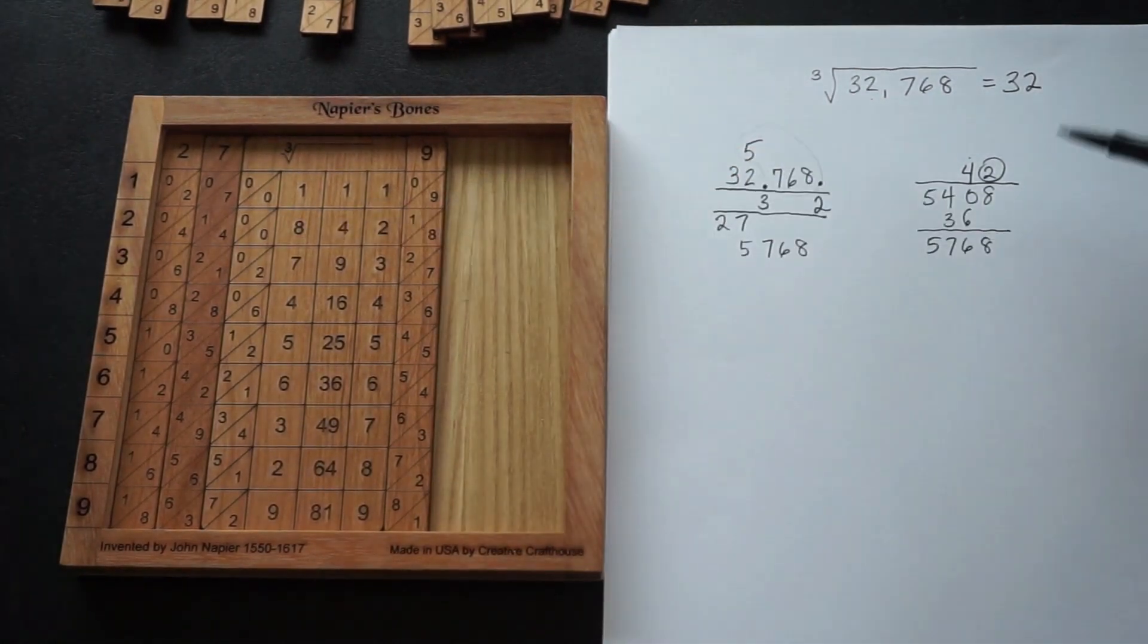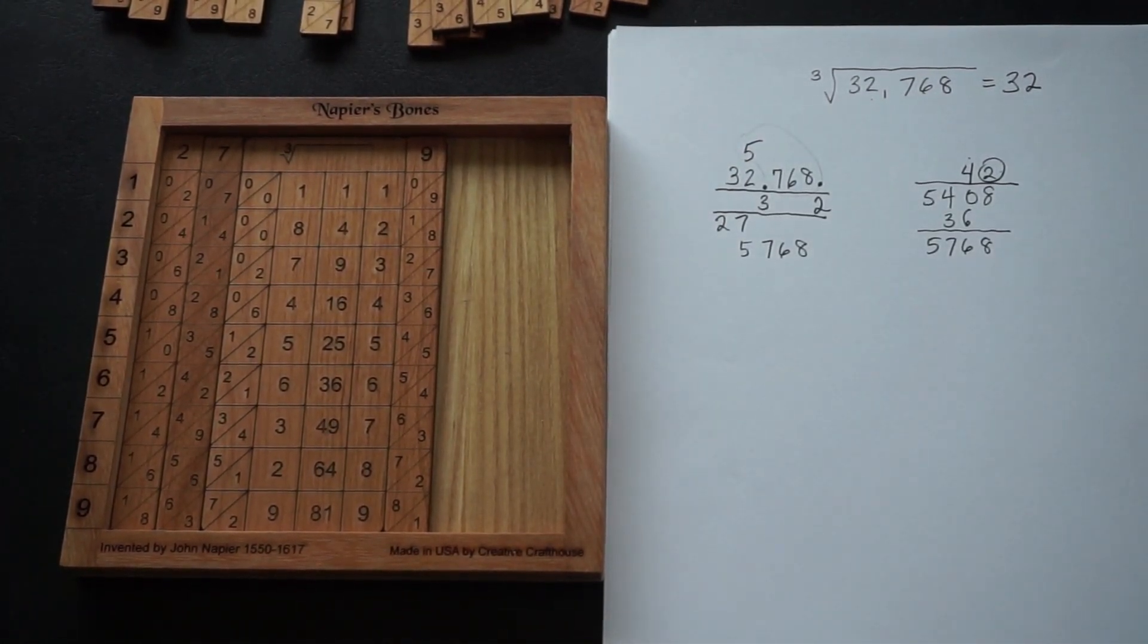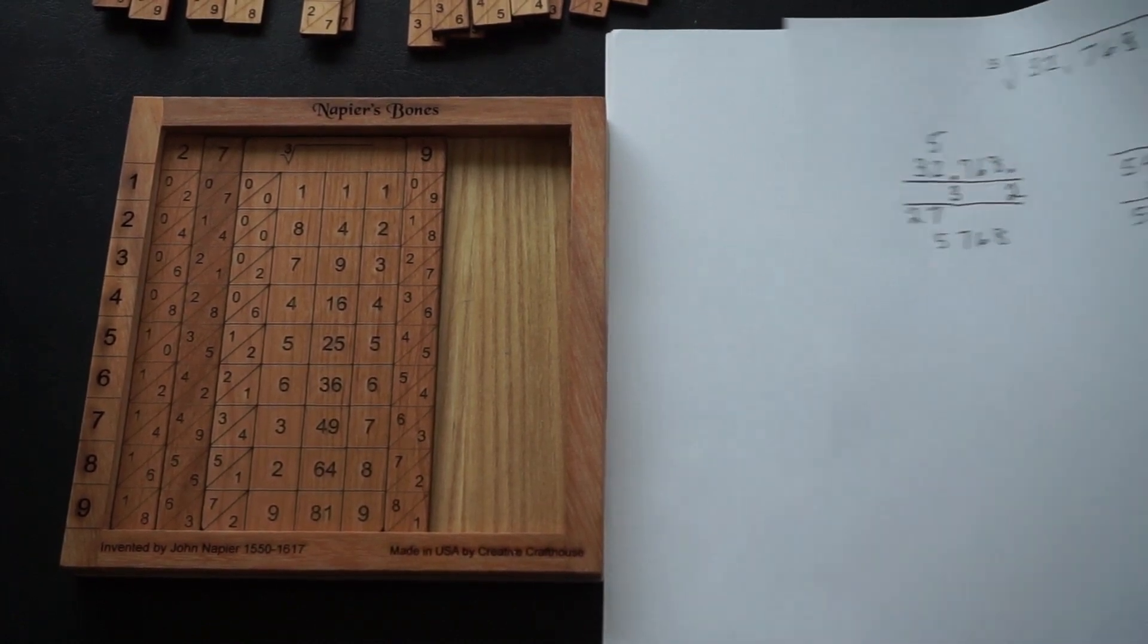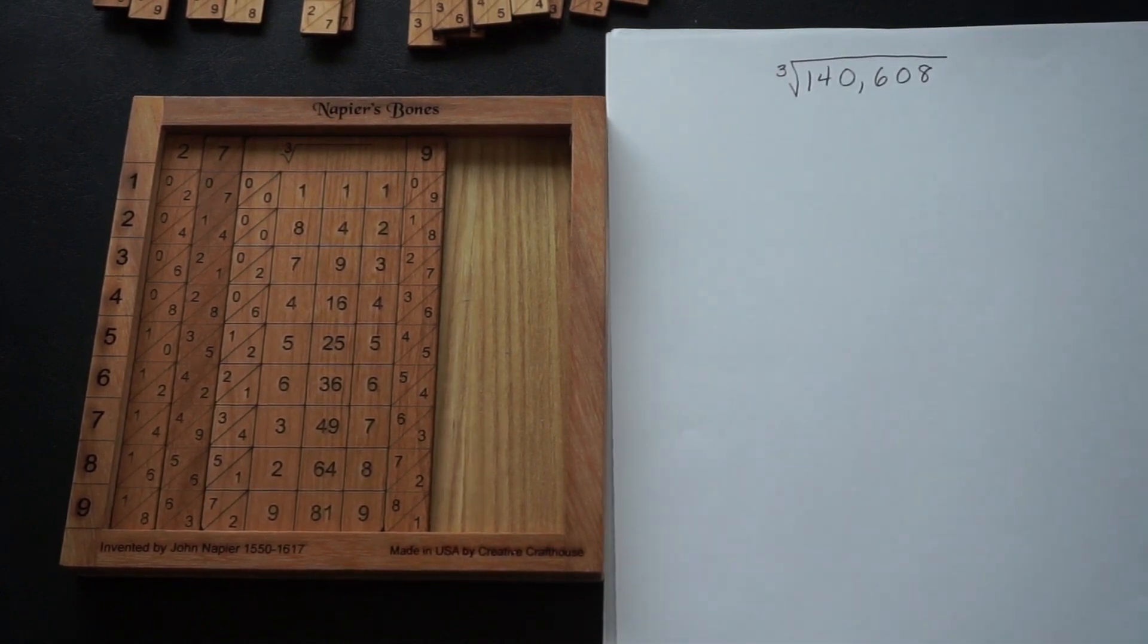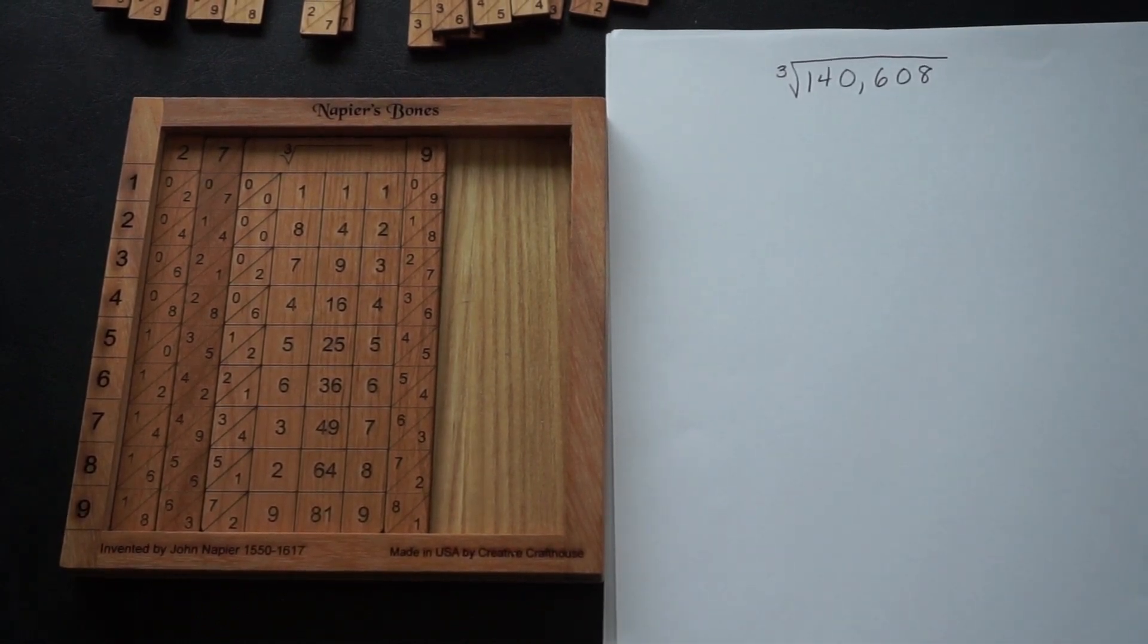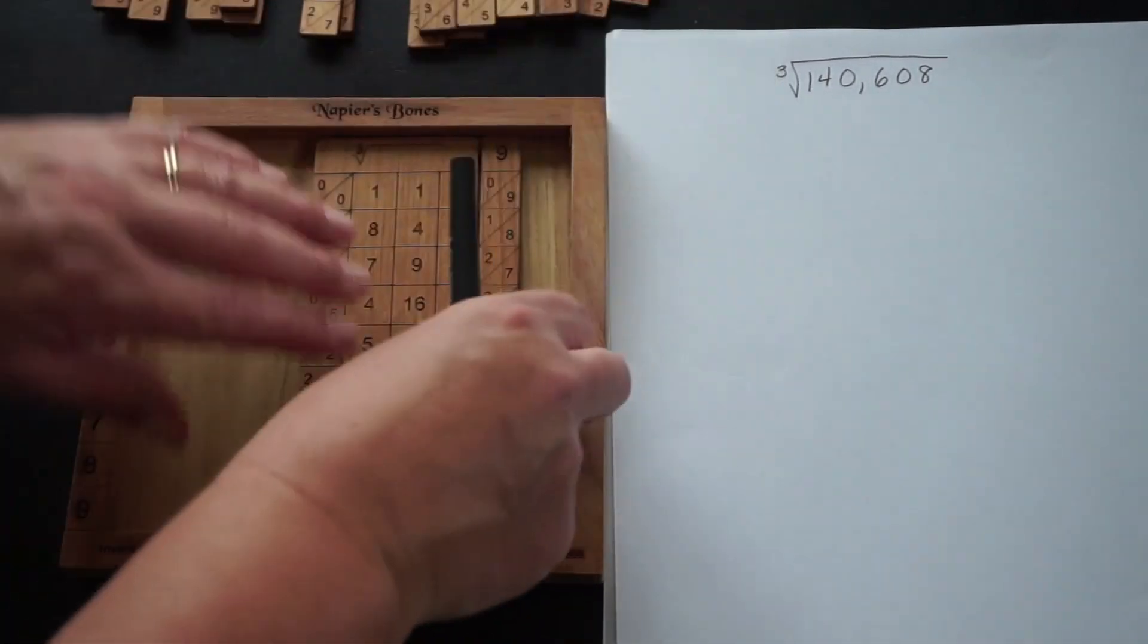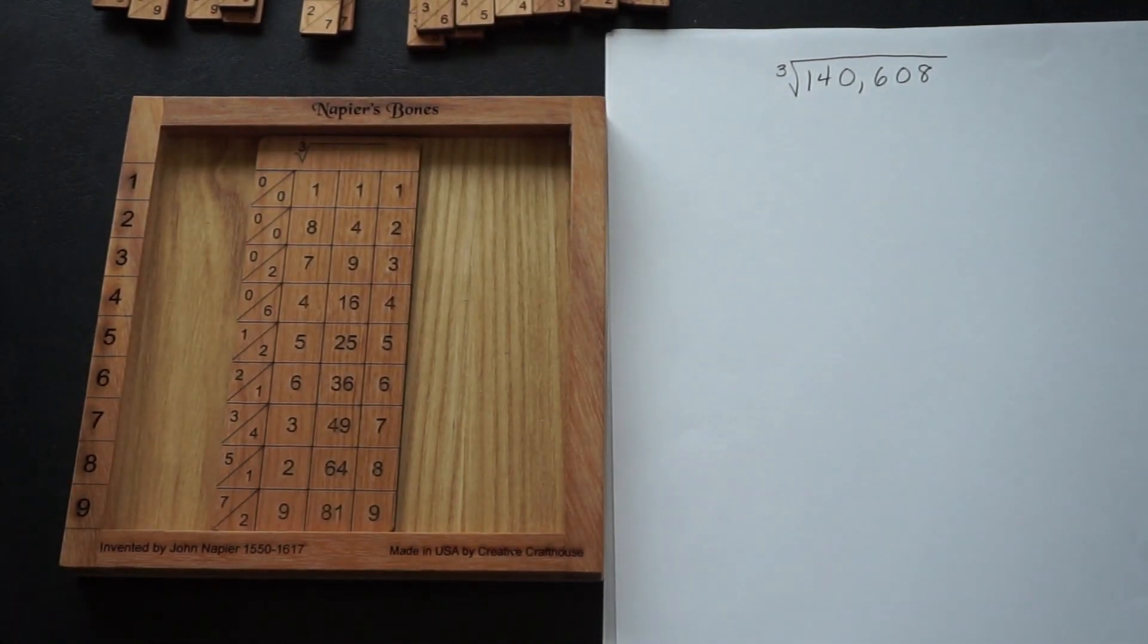If you forgot what row you were in, you can always find it here. That's what this number represents. So one more example. There are a lot of steps here, but hopefully at this point you're kind of getting into the flow of things. It's very repetitive once you do this a few times.